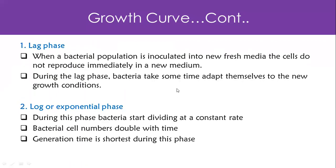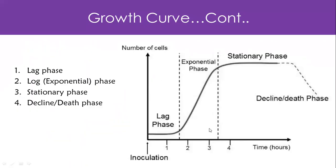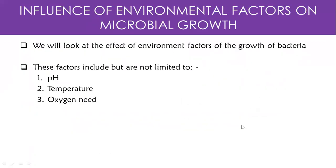To summarize, the growth curve — lag, log or exponential, stationary, and decline or death phase — is based on the assumption that we're working within a closed, controlled system. But in reality, the environment introduces different variables: temperature can vary, pH might vary, oxygen levels might vary, and so on. These are the environmental factors that influence microbial growth.